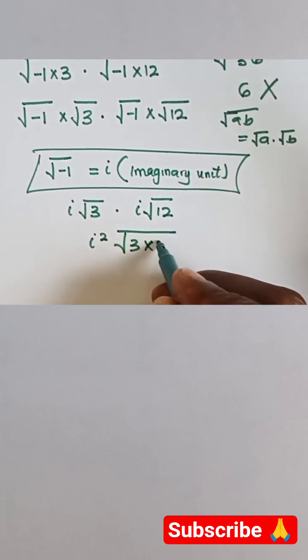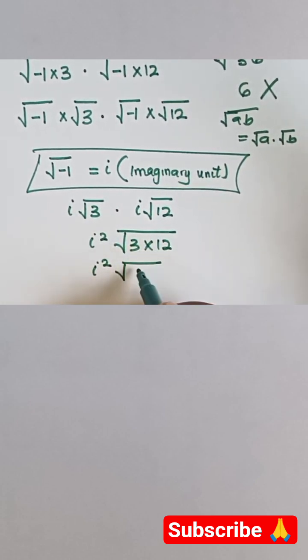Then we have √3 times √12. That would be √(3 × 12). So we have i² multiplied by √36.